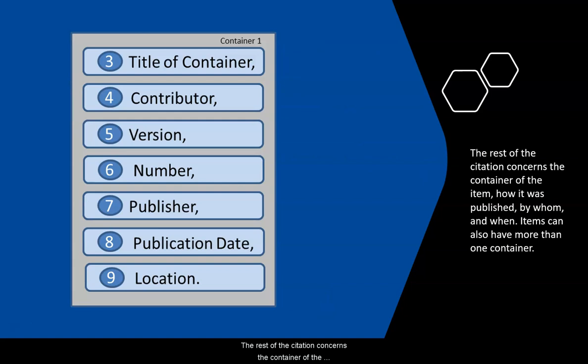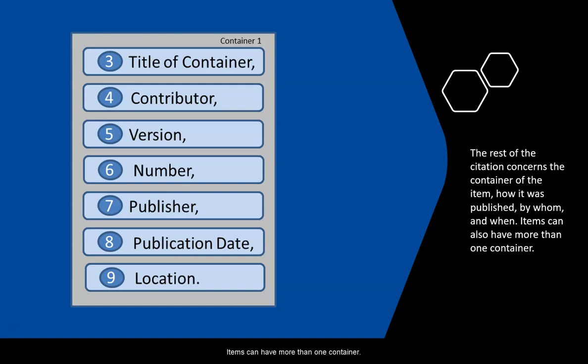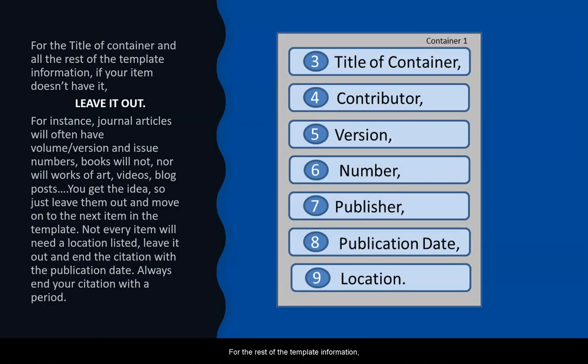The rest of the citation concerns the container of the item — how it was published, by whom, and when. Items can have more than one container. For the rest of the template information, if your item doesn't have the information necessary, leave it out.